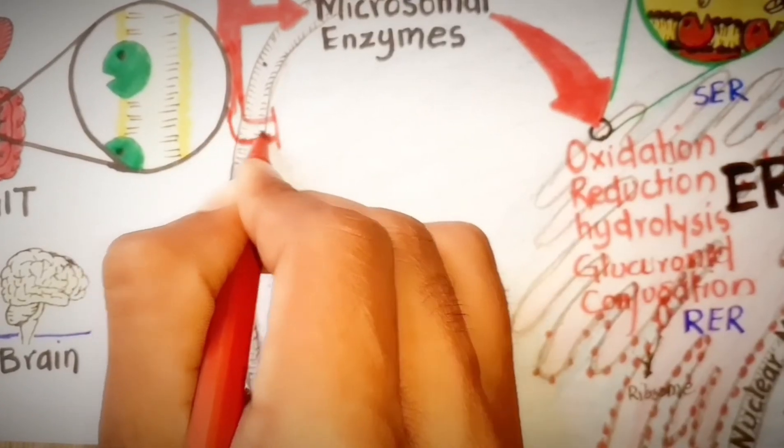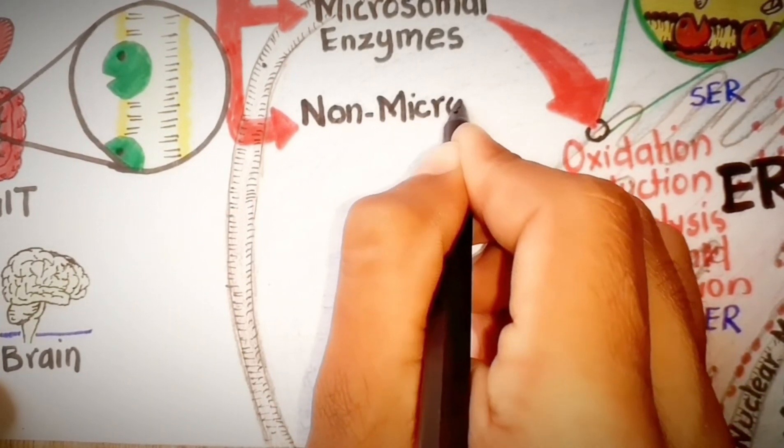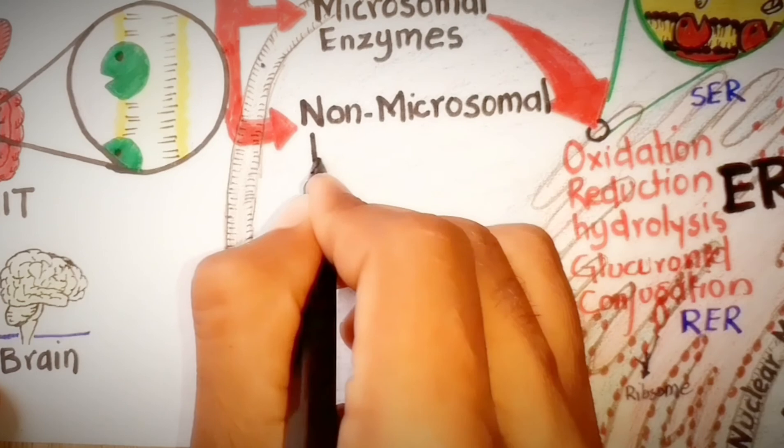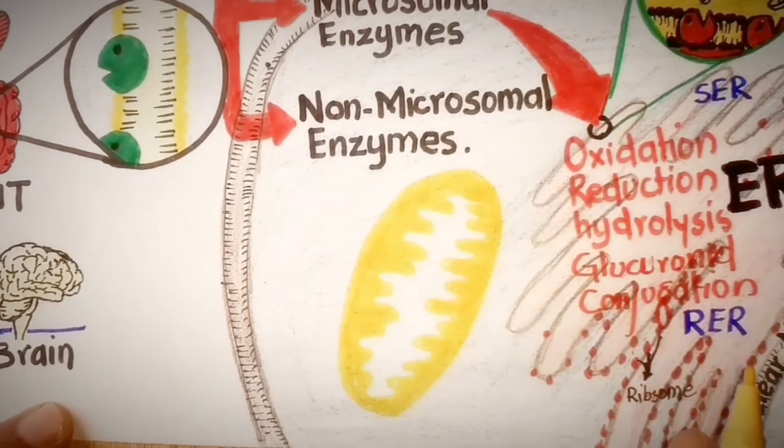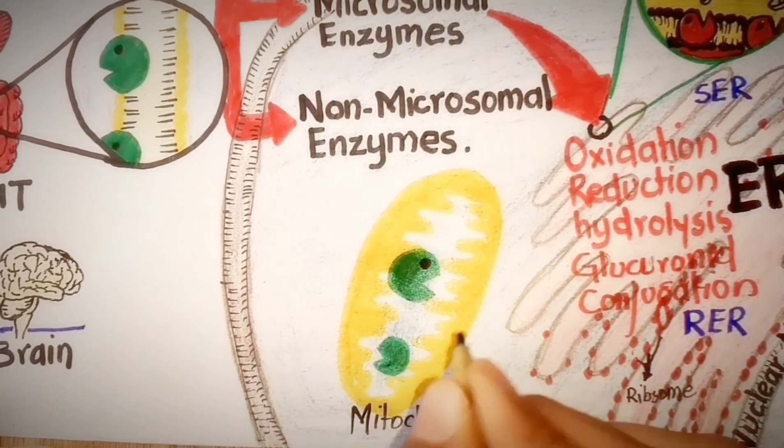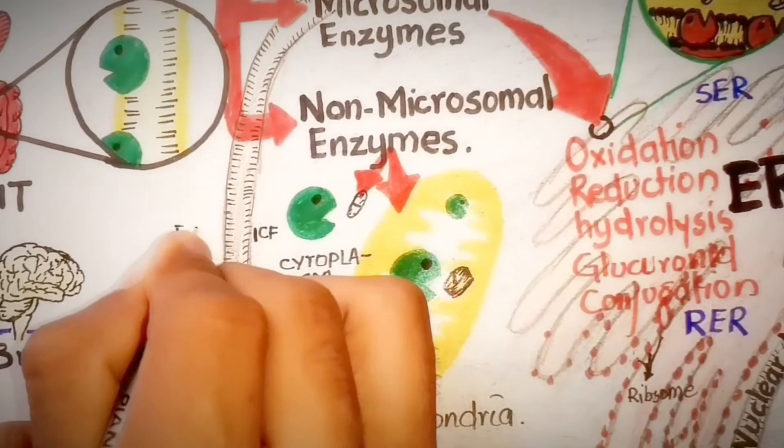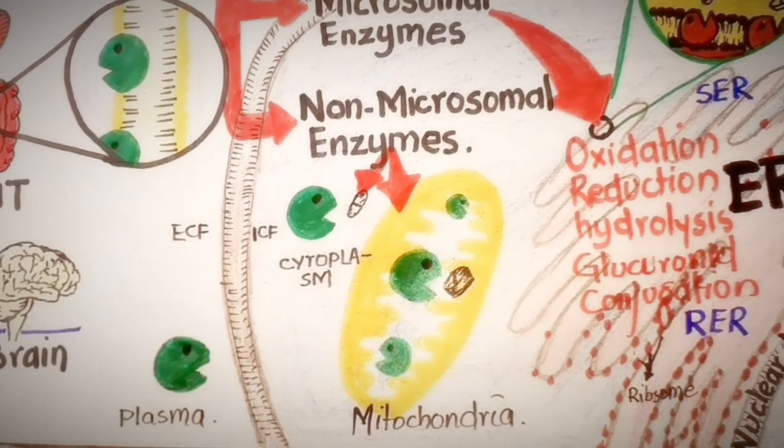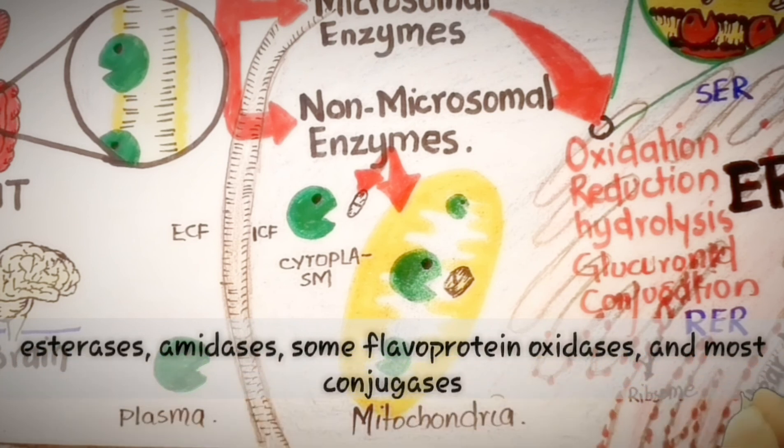The next subtype is non-microsomal enzymes. These enzymes are present in the cytoplasm and mitochondria of hepatic cells as well as in other tissues, including plasma of our blood. The esterases, amidases, some flavoprotein oxidases, and most conjugases are non-microsomal.